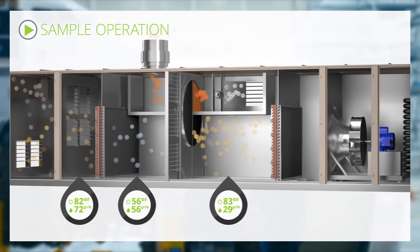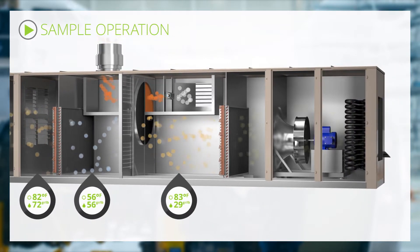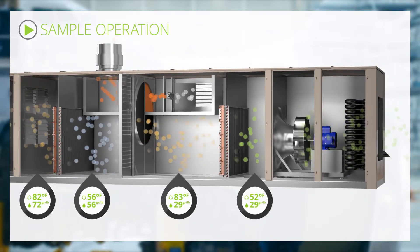The warm, dry process air then exits the wheel, enters the post-cooling coil, and is cooled to the desired temperature.